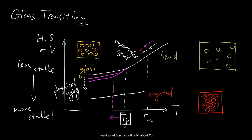Before we move on, I want to add on just a tiny bit about TG, because we will be going back and forth on this term later on. TG depends on the cooling rate, so in our study, we define a standard TG as the transition temperature obtained from a cooling rate of 10 Kelvin per minute.